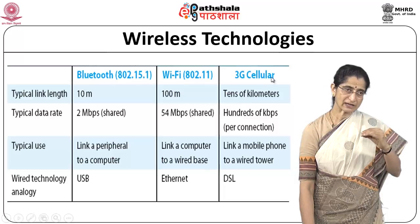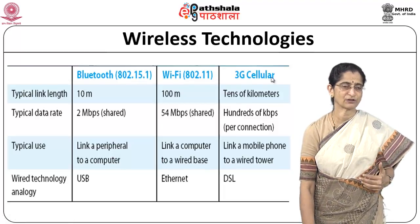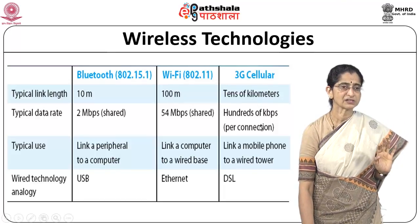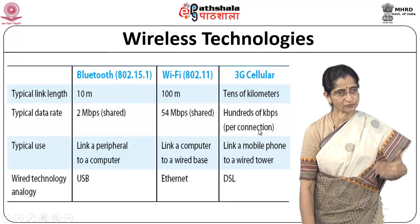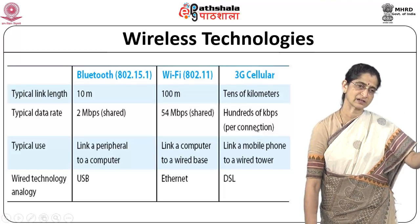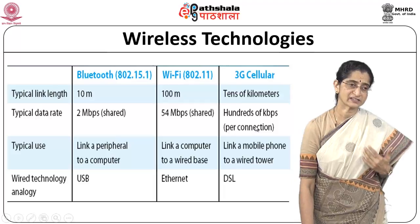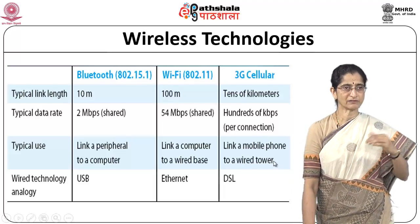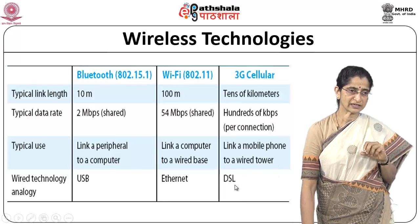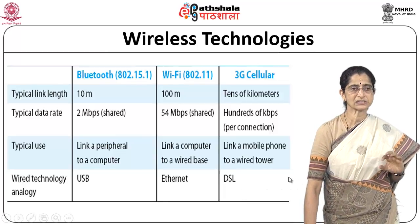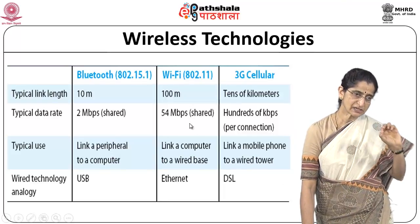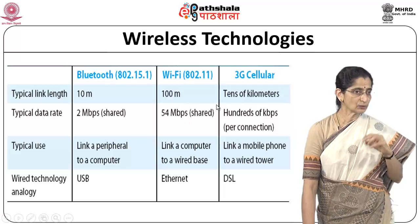3G, 4G, and cellular technology is used for much larger coverage of tens of kilometers, with hundreds of kilobits per second per connection. For 4G, data rates are in megabits and even hundreds of megabits. These are used to link a mobile phone to a wired tower, with DSL as the wired analogy. We will look at each of these technologies in detail, focusing specifically on Wi-Fi in this module.